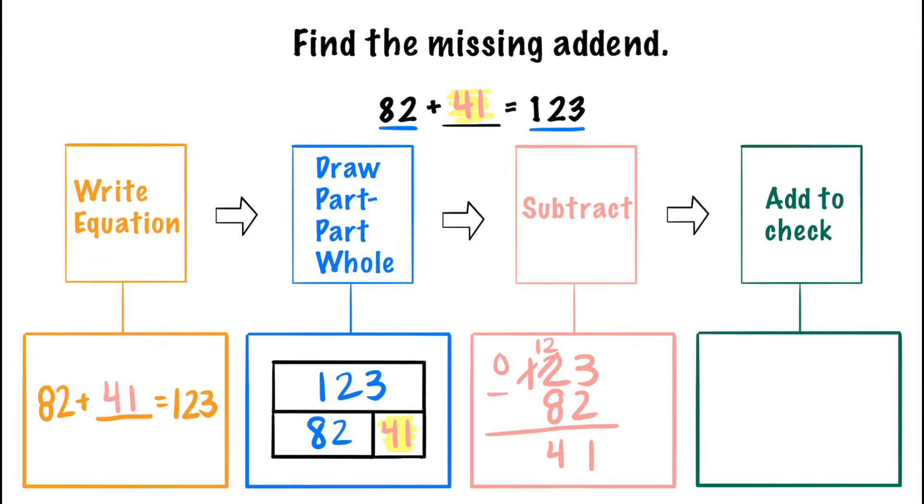Lastly we're going to add to check our work. We're going to add both of the parts so 82 plus 41. 2 plus 1 is 3 and 8 plus 4 is 12. So it is correct. 123 was the total. So we were right. The missing part was 41.